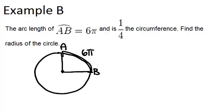So what that means is if 6π is a quarter of the circumference, the full circumference must be 6π times 4 or 24π.